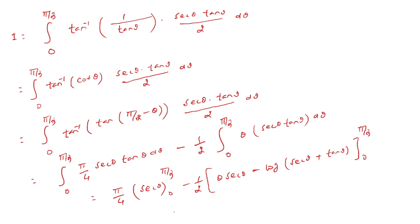This becomes π/4 times [sec 60° = 2 minus sec 0° = 1] minus 1/2 times [upper limit π/3: sec 60° = 2, log(2 + √3)] minus [0 minus 0 minus log 1].